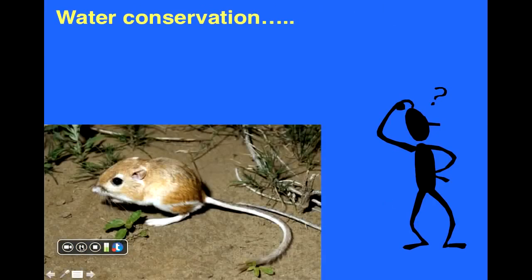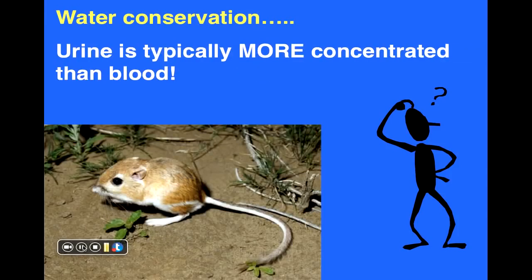When blood is filtered and used to produce urine, the urine produced can actually be a lot more concentrated than the blood itself. Typically urine is more concentrated than blood, and in humans our urine can be roughly four times as concentrated as the blood. Some animals like the kangaroo rat that live in dry desert-like conditions can produce urine that's at least 10 times as concentrated as their blood.